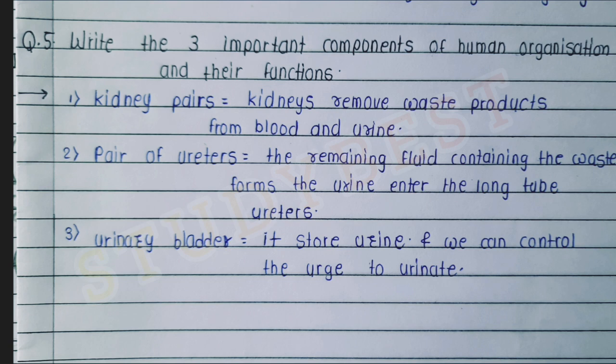Question five: write the three important components of the human excretory system and their functions. One: kidneys — kidneys remove waste products from the blood and produce urine. Two: pair of ureters — the remaining fluid containing waste forms urine and enters the long tube called the ureters. Three: urinary bladder — it stores urine and we can control the urge to urinate.